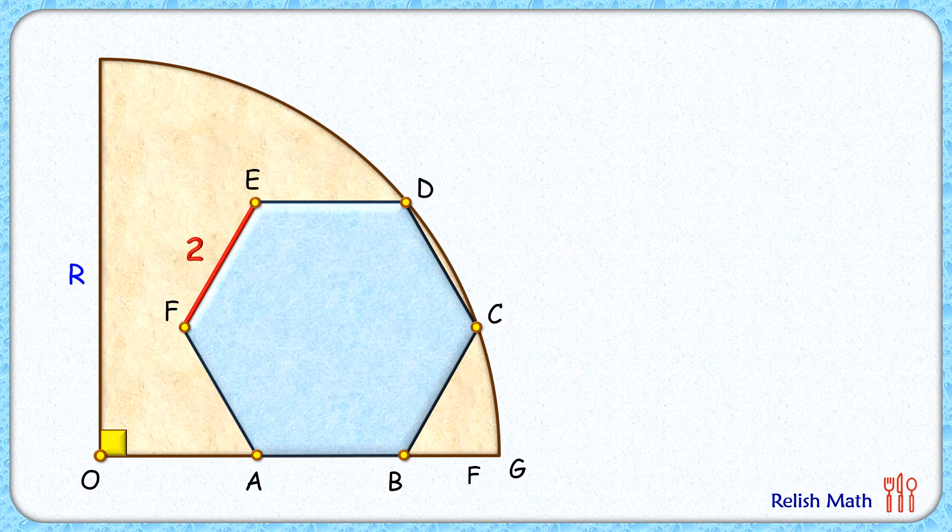Two things are given to us: one is this hexagon is touching the quadrant at points D and C, and second is it's a regular hexagon. So as it's touching point D, that means OD length is radius R, and OC length is also radius R.